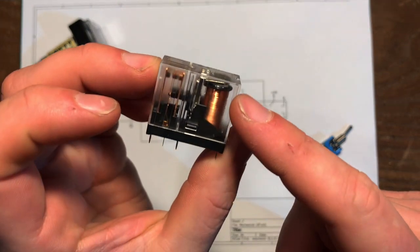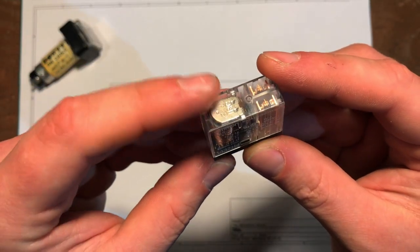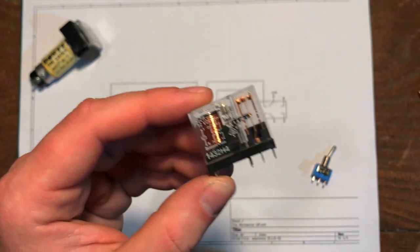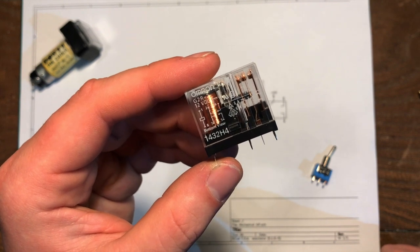Relays have a coil of wire and when you pass a current through that coil it attracts this armature at the top which through a lever moves the switch contacts. And this particular relay is a non-latching double throw type.